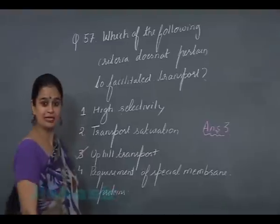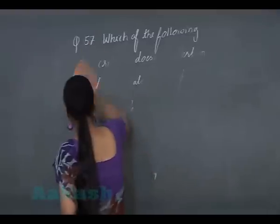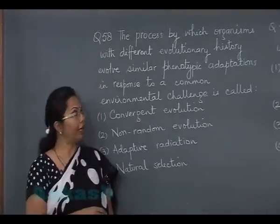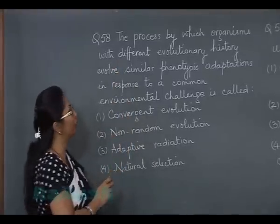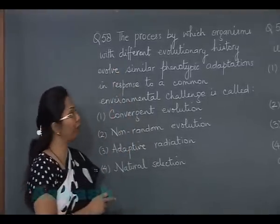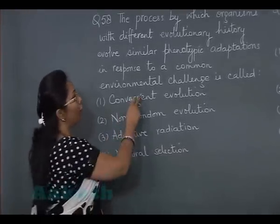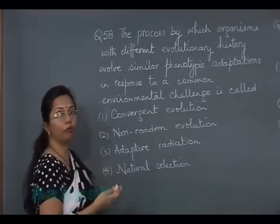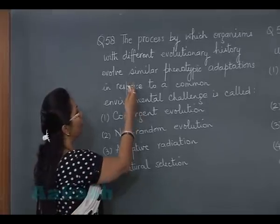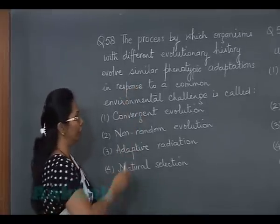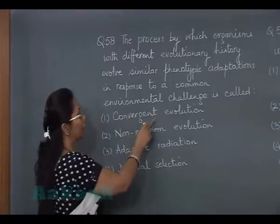Moving to question 58: the process by which organisms with different evolutionary history evolve similar phenotypic adaptations in response to a common environmental challenge is called — meaning unrelated organisms have similar external characteristics. This is a typical definition of convergent evolution, which is option number one.